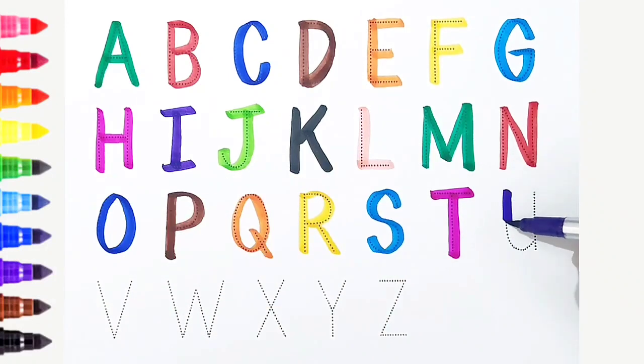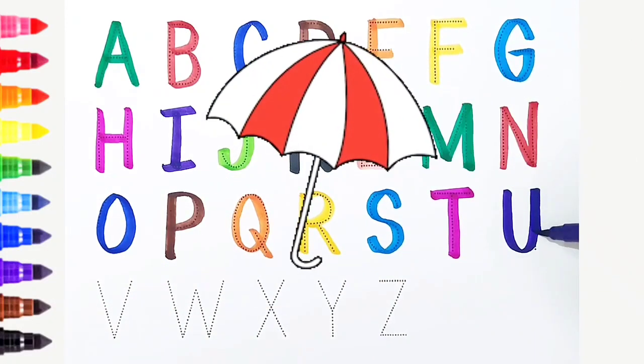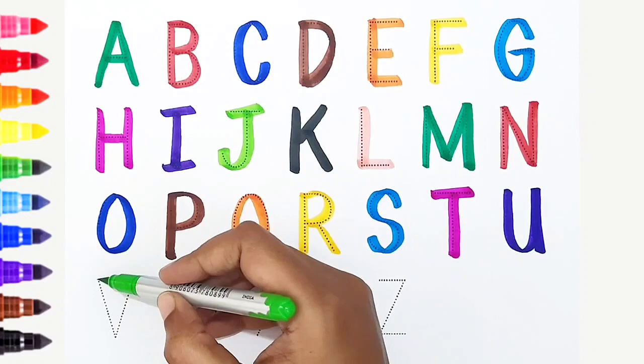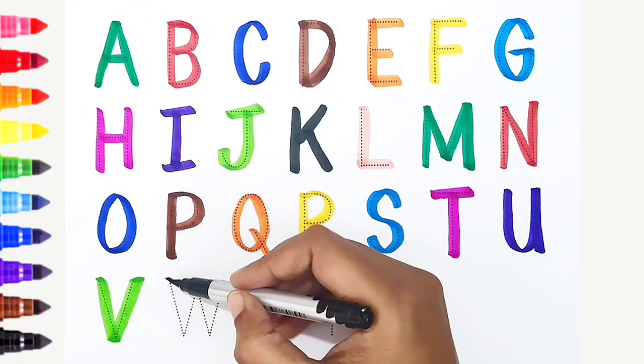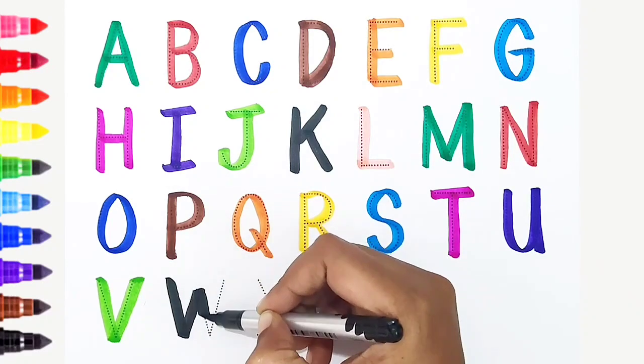U, violet color. U is for umbrella. V, light green color. V is for van. W, black color. W is for watermelon.